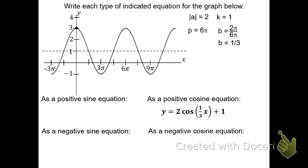The other three ways are going to require some type of phase shift. For a positive sine we need center and rising — moving one tick to the left. If a full cycle is 6 pi, the quarter cycle is 3 pi over 2, so the first mark to the left would be negative 3 pi over 2. Since the frequency is other than 1, we need double parentheses: y equals 2 sine, 1 third, quantity x plus 3 pi over 2, plus 1. Every one of these will have that same vertical shift, amplitude, and frequency — the only thing that changes is the phase shift.